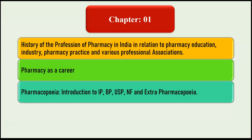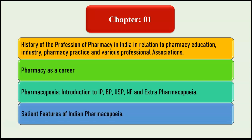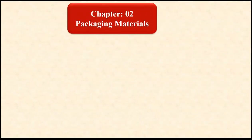We are going to study the introduction to IP (Indian Pharmacopoeia), BP (British Pharmacopoeia), USP (United States Pharmacopoeia), and Extra Pharmacopoeia. Then the next point we are going to study in the first chapter is the salient features of the Indian Pharmacopoeia. This covers the first chapter.